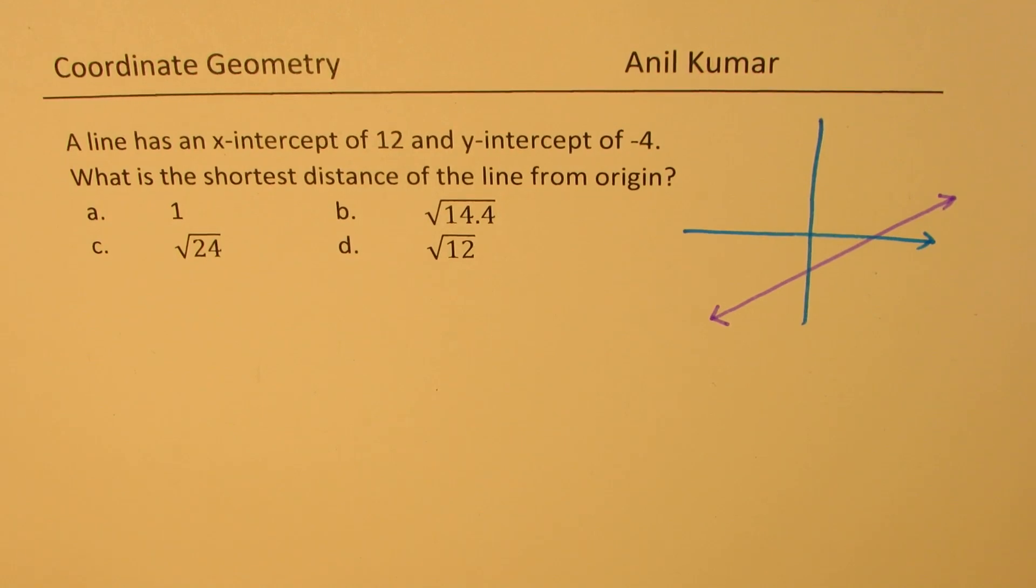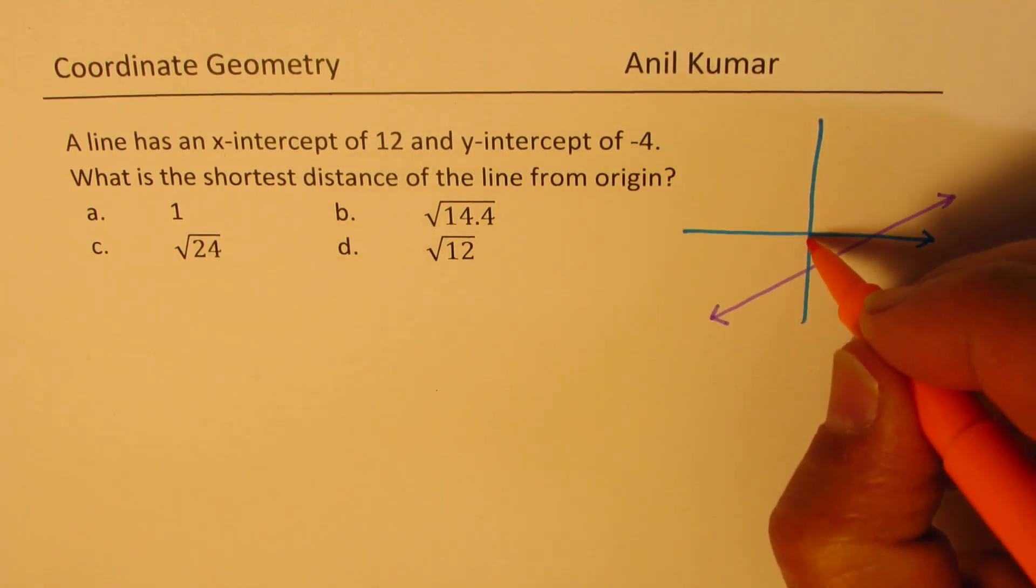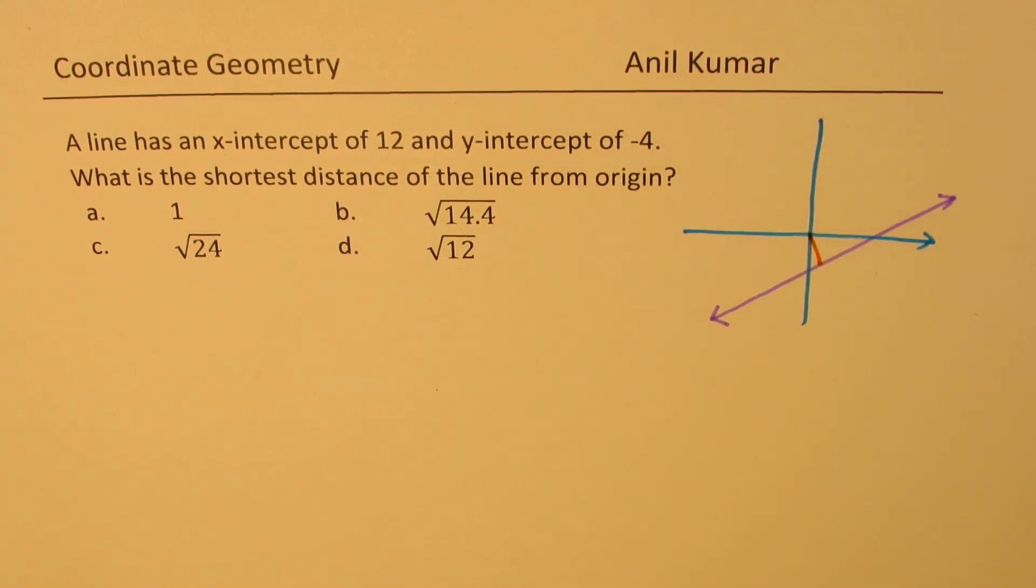And what we need to find is the shortest distance of the line from the origin. So, that is from here. That is the distance which we are looking for.